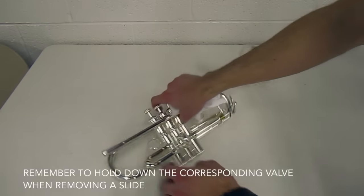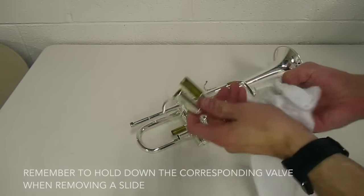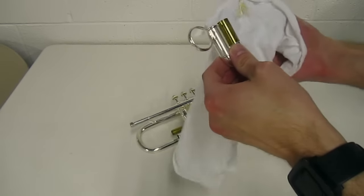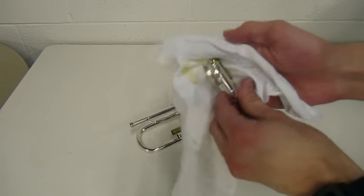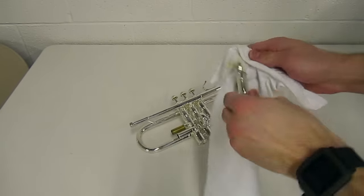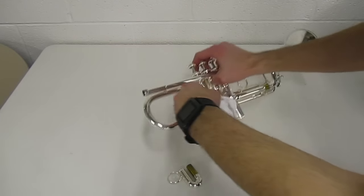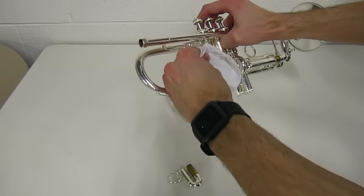The first thing we'll want to do is wipe all the grease and oil off of the slides and the valves. That way when we submerge the trumpet it doesn't get all in the water and you're not actually cleaning the trumpet, you're just bathing it in its own filth.